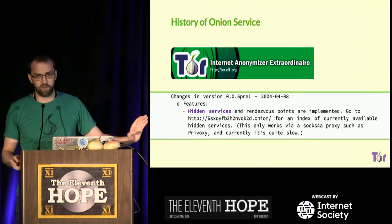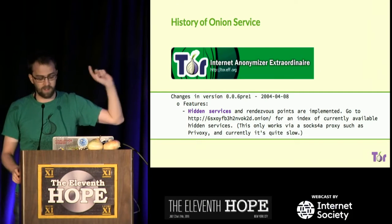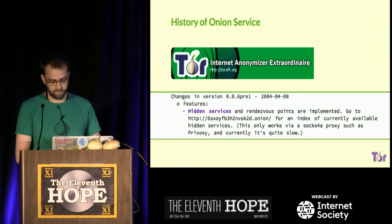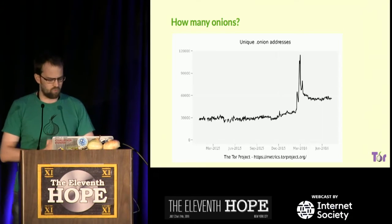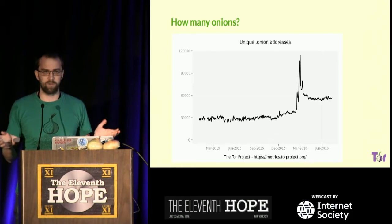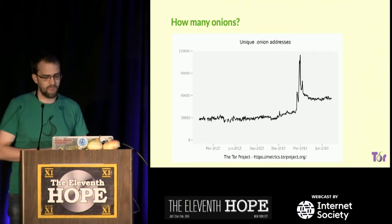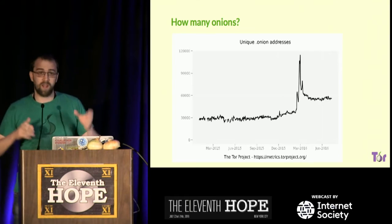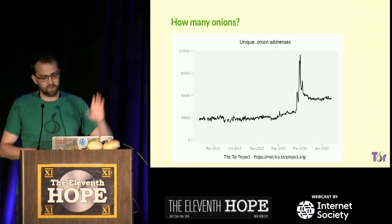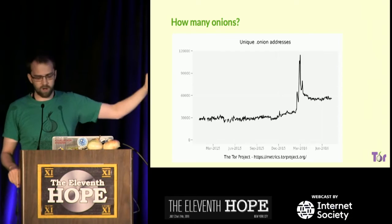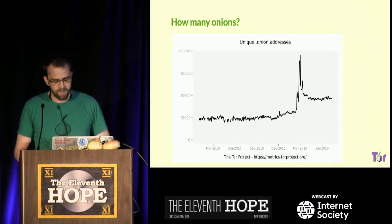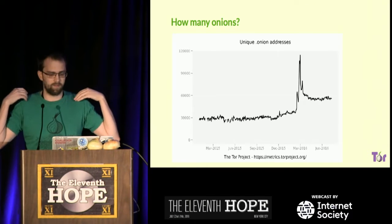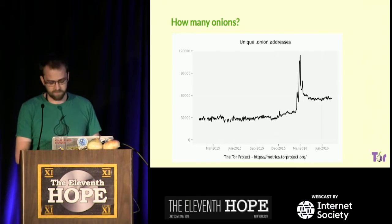A quick history: hidden services are quite old. 2004 was the first commit about hidden services — 12 years ago. In 2014, maybe beginning of 2015, we started collecting statistics to measure what's going on in the onion service world. This was quite a challenge; it took us many months to come up with a privacy-oriented way to collect those statistics. This shows the amount of unique .onion addresses currently in the network. We don't know what happened in March — someone just created half a million of them — but it went back. Right now we're around 60,000 unique .onion addresses.